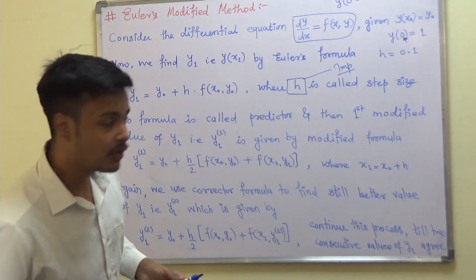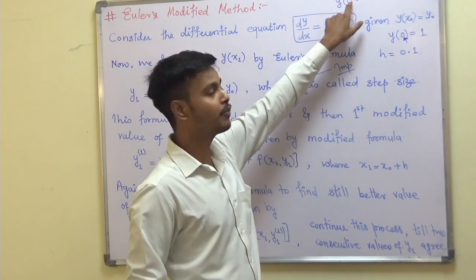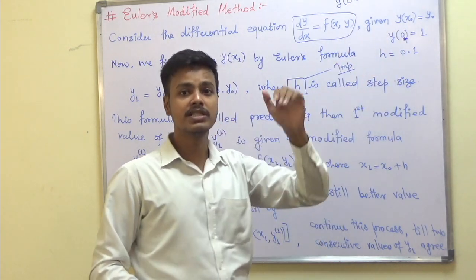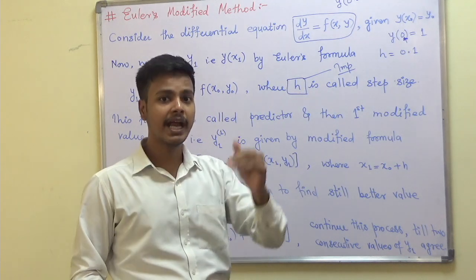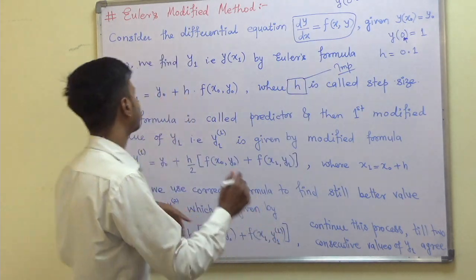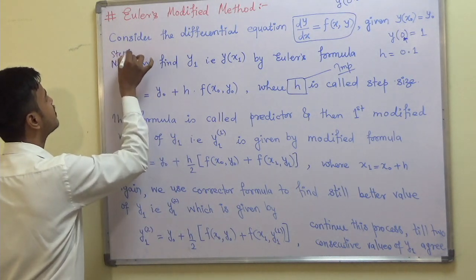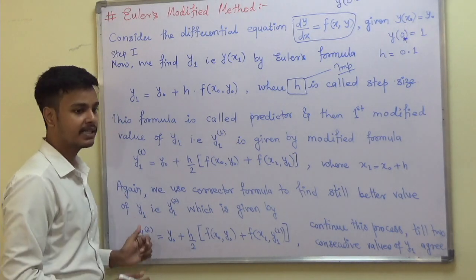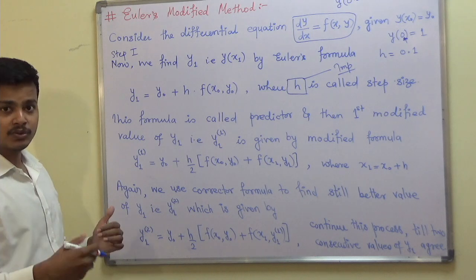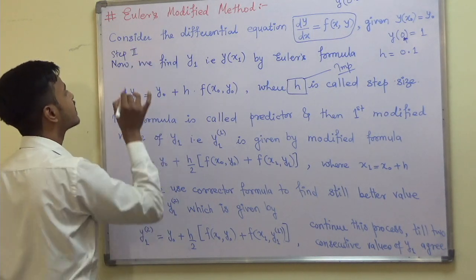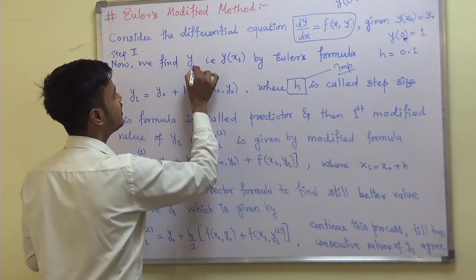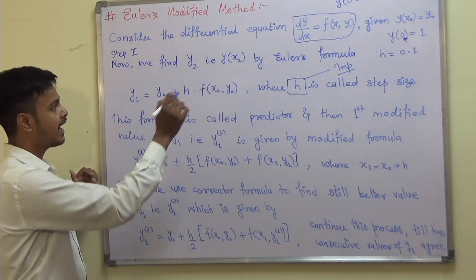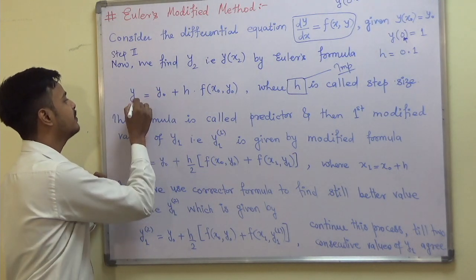Because it is a two-step method: we have to find y(0.2) with a step size of 0.1 starting from 0. From 0 to 0.1 is step one, and from 0.1 to 0.2 is step two. You have to continue each step until the values repeat. In step two, if required, we find y2, or y(x2), using Euler's formula.